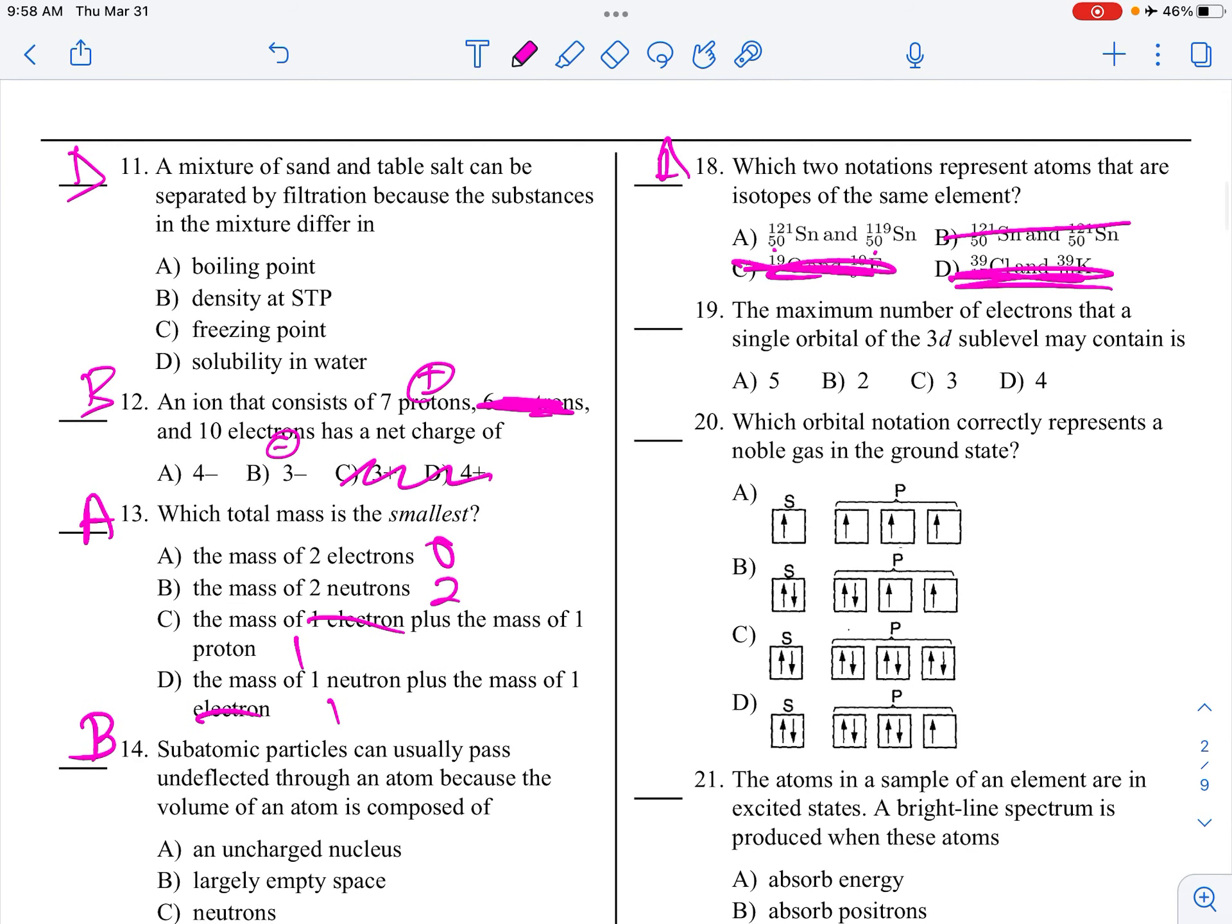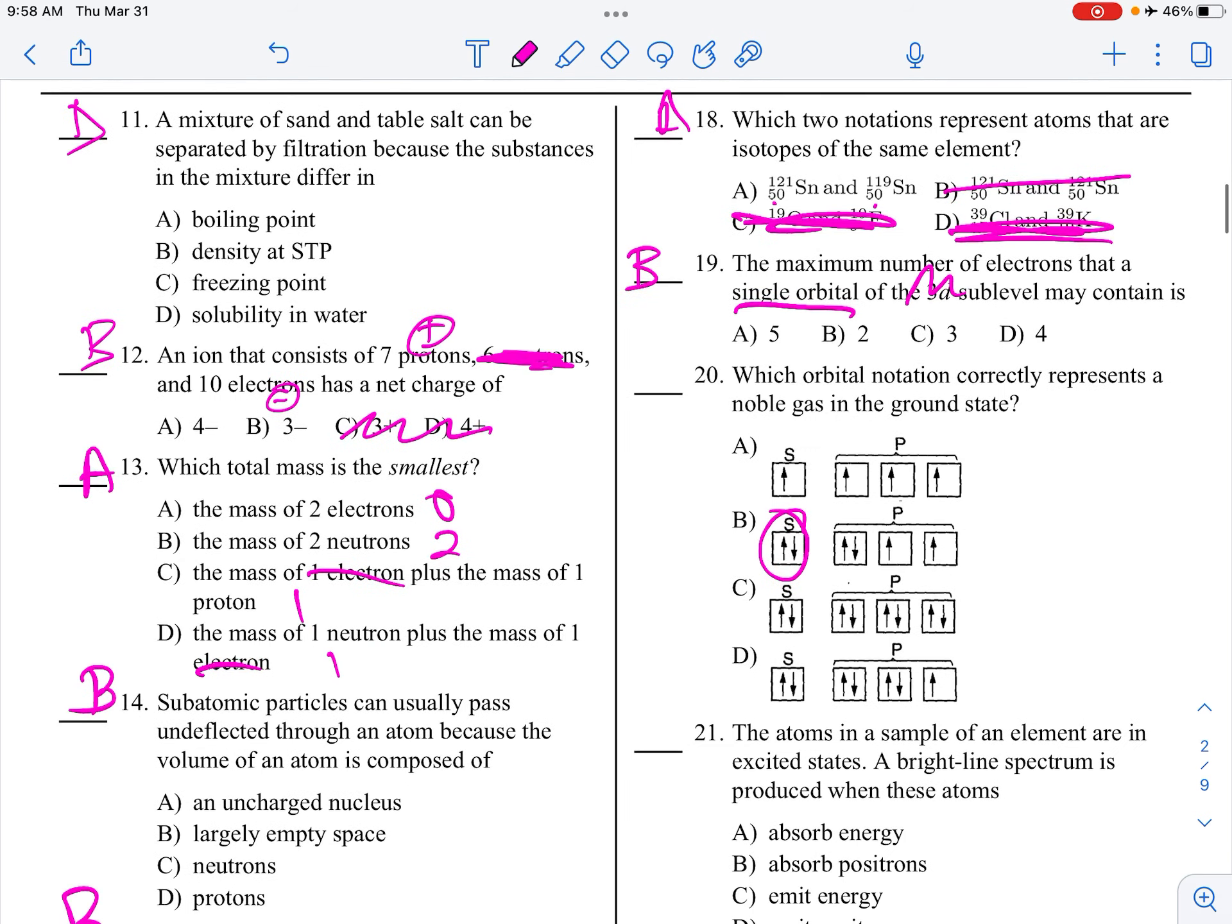The maximum number of electrons that a single orbital in the 3D sublevel may contain. Okay, well, that's the key, single orbital, so it really doesn't even matter that it says 3D. How many can fit in a single orbital? Two. Which orbital notation correctly represents a noble gas in the ground state? Noble gases have full outer shells, or full orbitals, so who is full? Choice C.